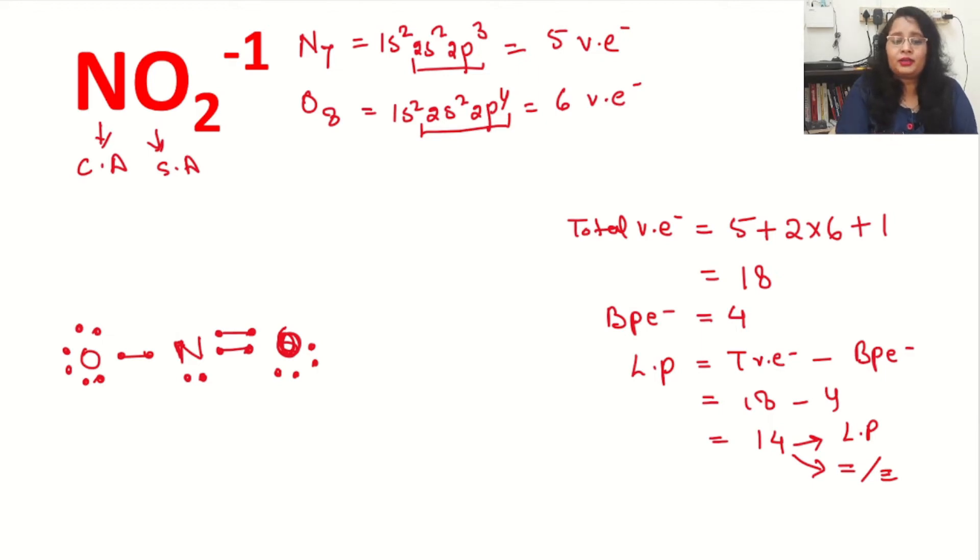So now we have minus 1 charge. Where we can put it? We can put it on the oxygen. Why? The reason is always the negative charge will be acquired by the surrounding atom and the positive charge will be acquired by the central atom. This is the main tip. The other thing is for oxygen, if oxygen is having double bond, it will have no charge. If oxygen is having 1 bond, it will have 1 minus charge. And if oxygen is having 3 bonds, it will acquire the positive charge. Here, this oxygen is having only 1 bond. So we will give minus charge to this oxygen. And this will be our structure. Complete.